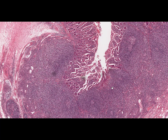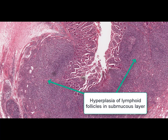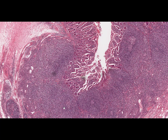At high magnification we can find the following typical microscopical changes. First, very pronounced hyperplasia of aggregated lymphoid follicles, and an ulcerative defect at the site of lymphoid tissue hyperplasia can be found.